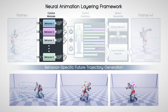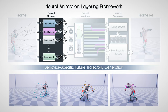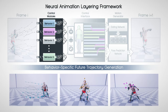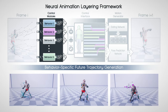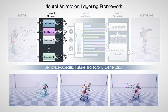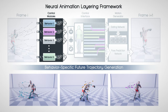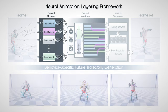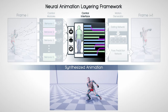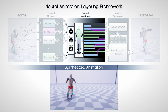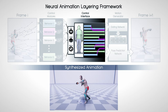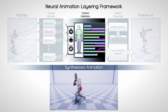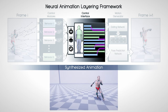Next, a set of modular controllers of arbitrary form — such as neural networks, motion matching, or animation clips — produce the future curves for different selected actions and behaviors. Combining and editing them in the control interface then enables generating novel animations by the motion generator.